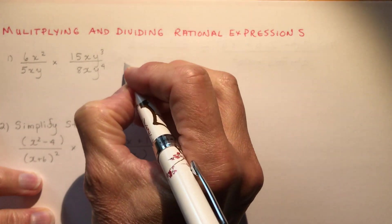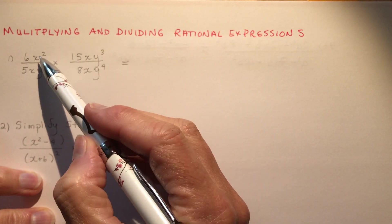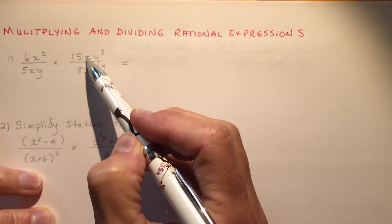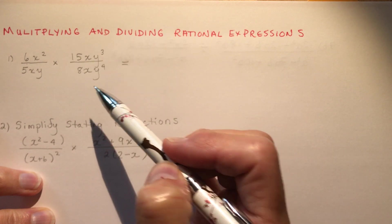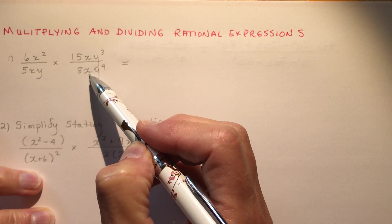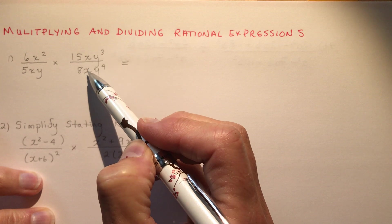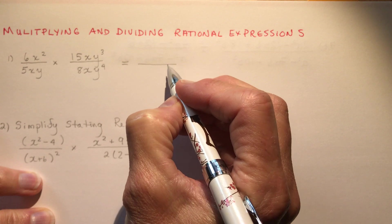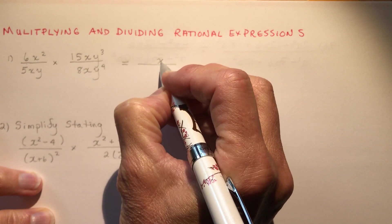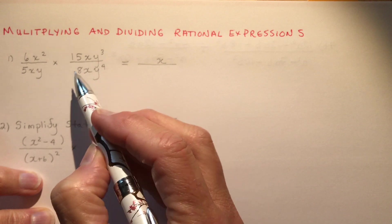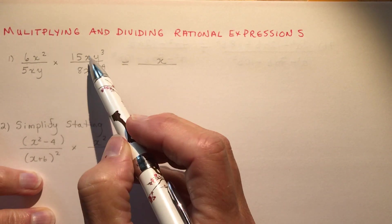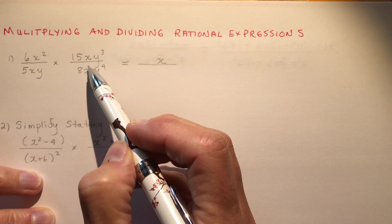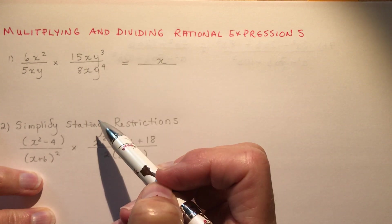I would basically just go across here and say, how many x's would I have on the top if I expanded this? I have 2 here and 1 here, that would make 3 on the top. And x times x would be x squared. So I would have 3 on the top and 2 on the bottom. If I have x cubed divided by x squared, that leaves me with 1x on the top. So that cleaned up all my x's.